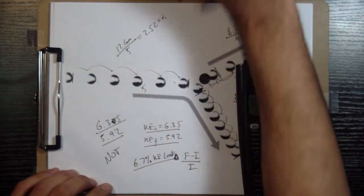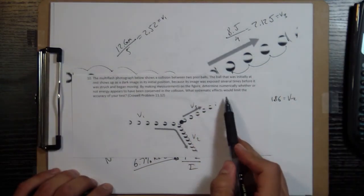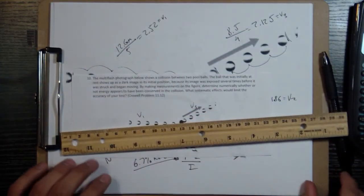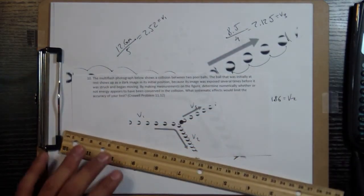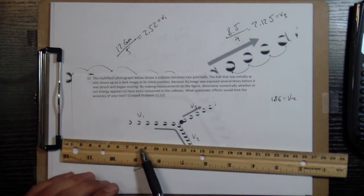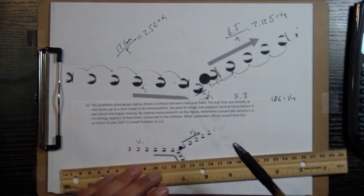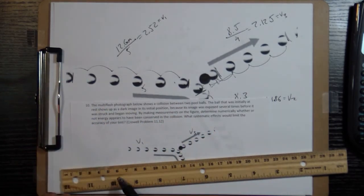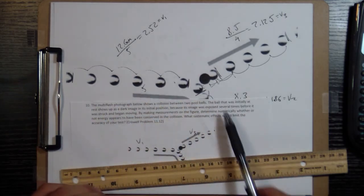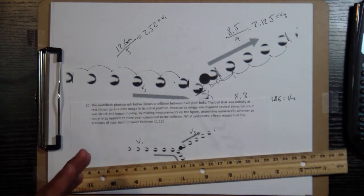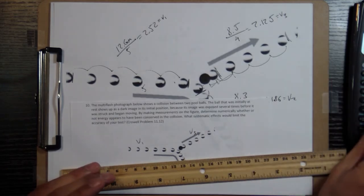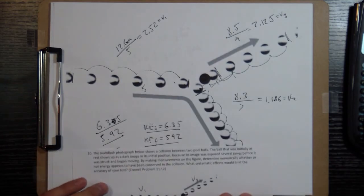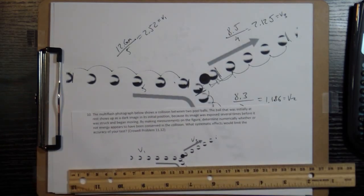And for the second part of the problem where it asks what systematic effects will limit the accuracy of your test? Systematic effects would be how are we measuring. So I'm measuring with this ruler and it has an accuracy of plus or minus one millimeter and depending on how crisp this image is and how accurately we're measuring it, also depending on whatever camera took this photo and how accurate the spacing in time is, that's going to affect things. Probably those are the biggest things. Alright. Done.